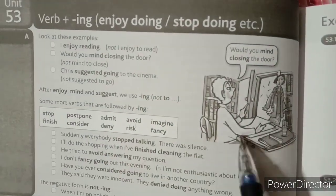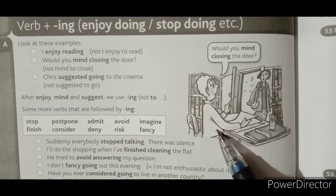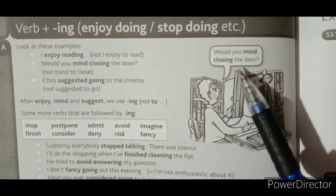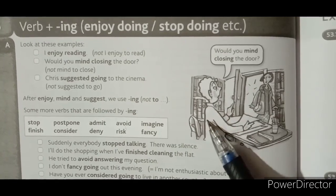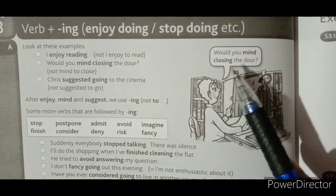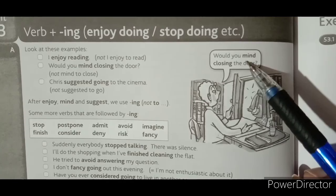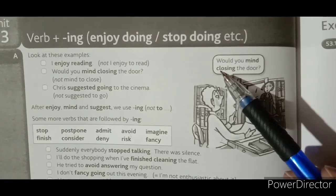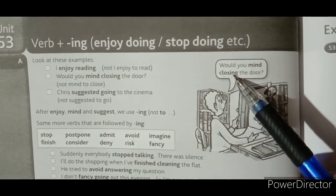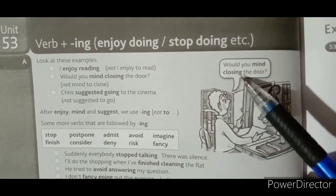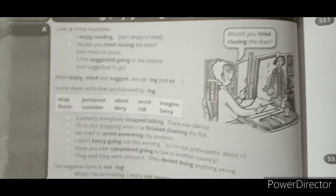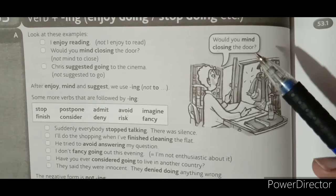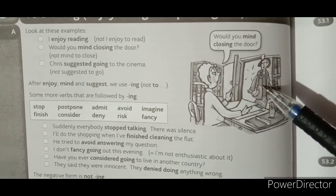Here is an example situation: a guy is asking her, 'Would you mind closing the door?' So 'mind' is the verb, and 'closing' is the verb 'close' with -ing. This is our topic today — verb with -ing — and 'Would you mind closing the door?' is a perfect example.